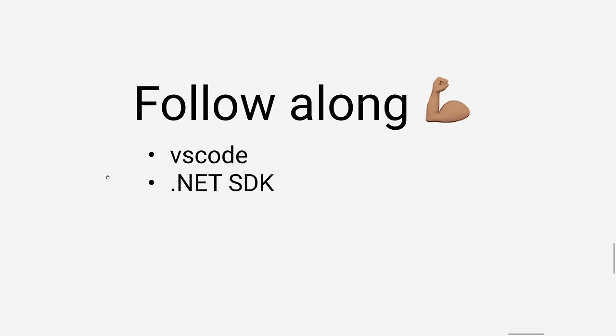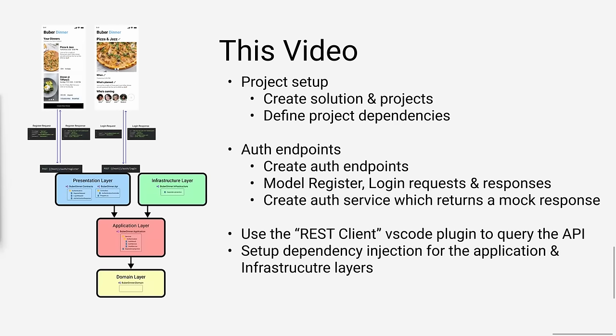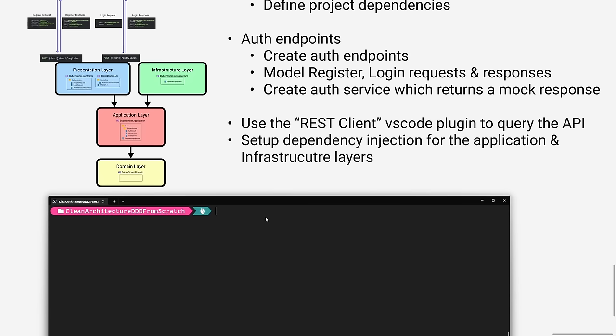If you haven't already, go ahead and download Visual Studio Code and the .NET SDK. Today we're going to be creating the solution, setting up the projects and dependencies, and we'll start some authentication work that will continue in the next video. The first thing we want to do is create the solution, so: dotnet new sln and let's give it the name BuberDinner.